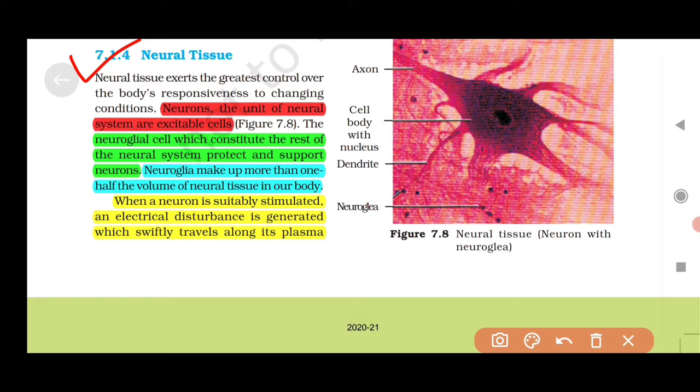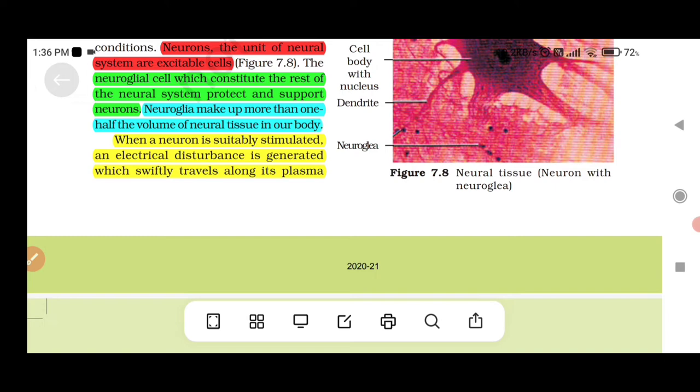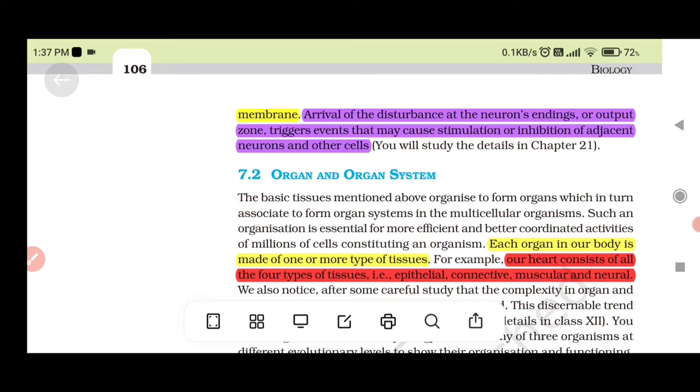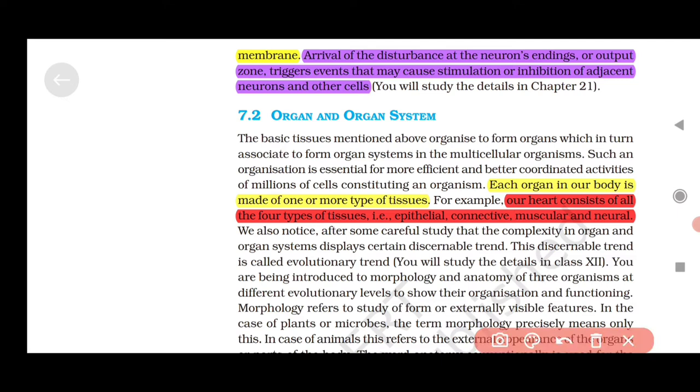7.1.4 Neural Tissue: Neurons, the unit of neural system, are excitable cells. Neuroglia cells, which constitute the rest of the neural system, protect and support neurons. Neuroglia make up more than one half the volume of neural tissue in our body. When a neuron is suitably stimulated, an electrical disturbance is generated which swiftly travels along its plasma membrane. Arrival of the disturbance at the neuron's endings triggers events that may cause stimulation or inhibition of adjacent neurons and other cells.